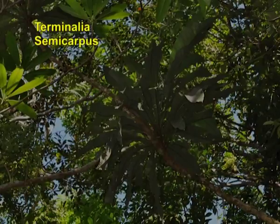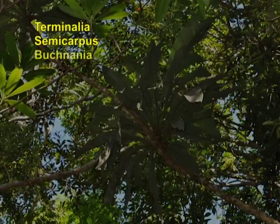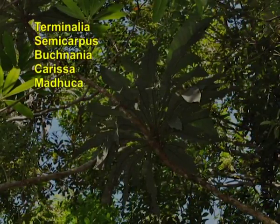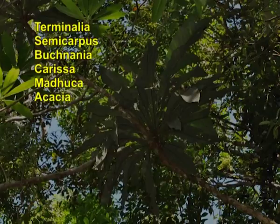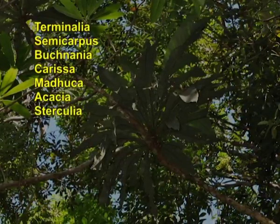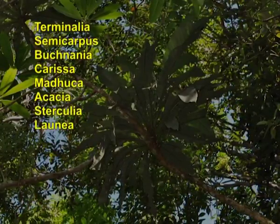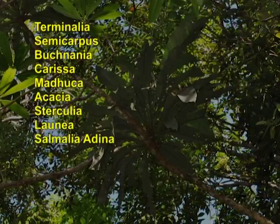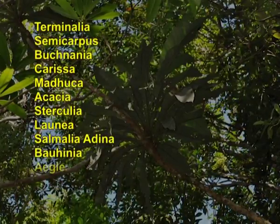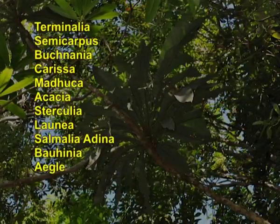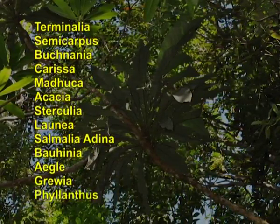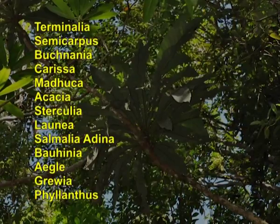Other trees and shrubs of Sal-dominated northern forests include Semecarpus, Buchanania, Casearia, Madhuca, Acacia, Sterculia, Lagerstroemia, Salmalia adina, Bauhinia, Aegle, Grewia, Phyllanthus, etc.